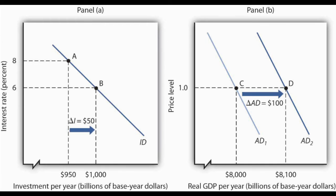You can imagine how this works with monetary policy. If the Fed wants to enact an expansionary policy to stimulate the economy, they'll buy bonds, which adds reserves to the banking system and shifts the demand curve for bonds to the right, raising the price of the bonds, which — along with the extra reserves in the banking system — pushes down interest rates. Those lower interest rates stimulate investment demand.